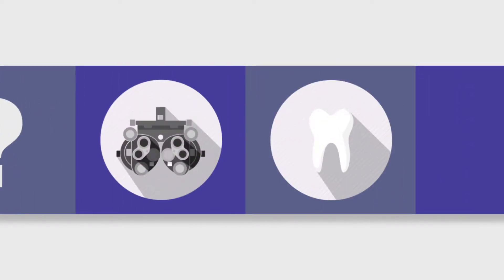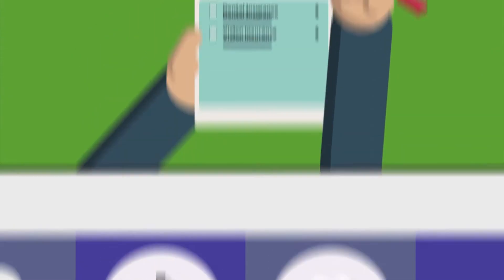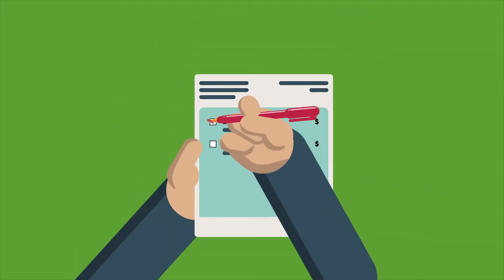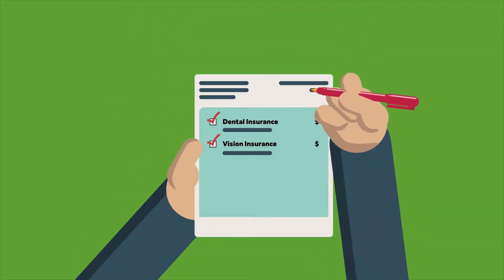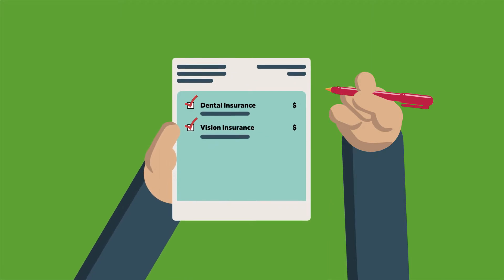We're proud to offer a variety of voluntary benefits like vision and dental that are designed to help protect you. Choosing to elect traditional benefits like dental and vision will help you gain coverage beyond your basic health insurance.